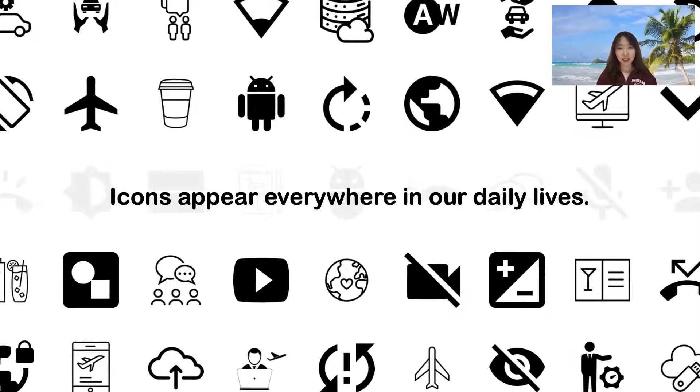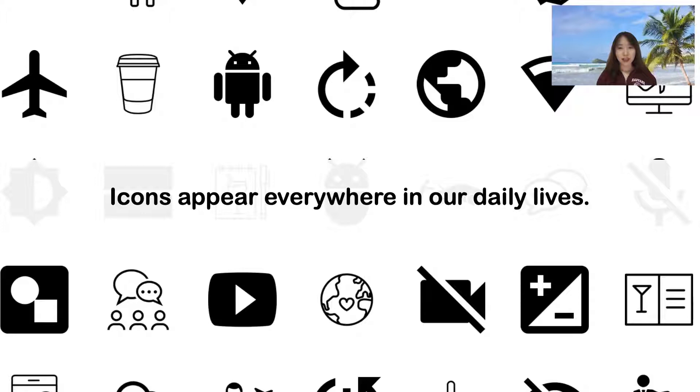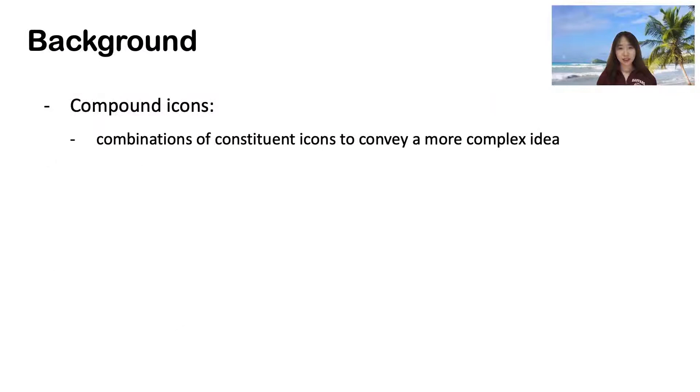Icons, as a universal language, appear everywhere in our daily lives. They are one of the most simple and efficient ways to convey a message. To transmit complex information, an icon is often composed of similar sub-icons corresponding to basic, easily recognizable concepts.